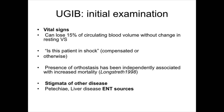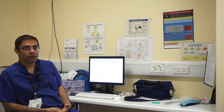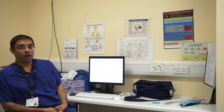Once the initial vital assessment has been done, it is also important to assess for stigmata of other disease. Has the patient got liver disease, features of decompensated chronic liver disease, previous surgeries, or malignancies? Has the patient recently had an endoscopic intervention like ERCP that could explain an upper GI bleed? Could there be an ENT source? Drug history is extremely important — is the patient on antiplatelet agents, anticoagulants including newer agents or warfarin? Does the patient have a bleeding disorder like haemophilia?